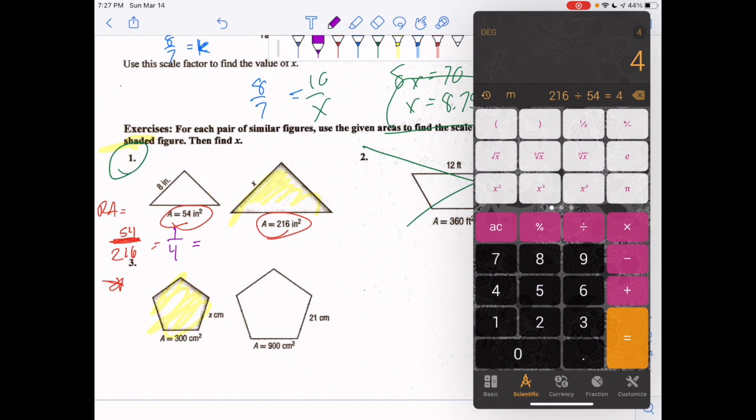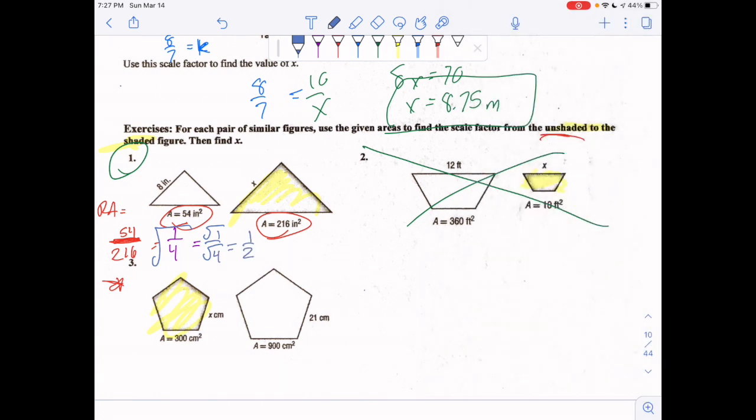Now to find your scale factor, you gotta take the square root. Square root of 1, square root of 4: 1 over 2. So 1/2 is your scale factor. Going from unshaded to shaded: 8 over x. Cross multiply and x would be 16, 16 inches to be exact.